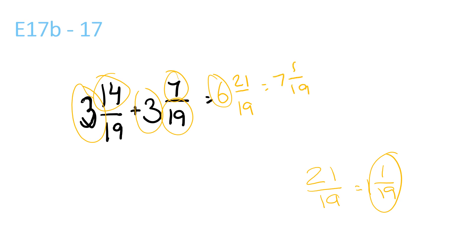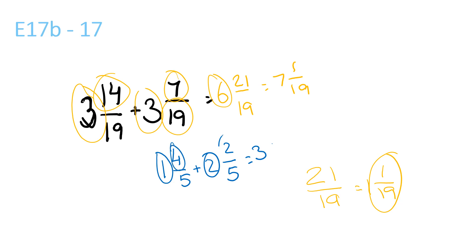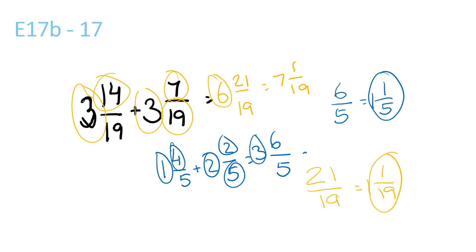And I'll do the first question again. So the first question was 1 and 4 over 5 plus 2 and 2 over 5, which is equal to 2 plus 1 is 3, and 4 plus 2 is 6 over 5. 6 over 5 is equal to 1 and 1 over 5. So 1 and 1 over 5 plus 3 is equal to 4 and 1 over 5. That's your answer.